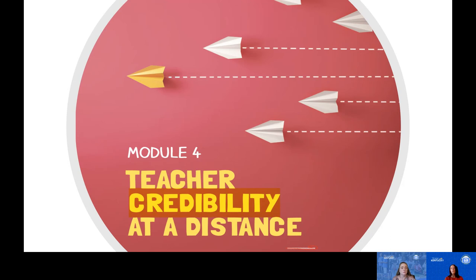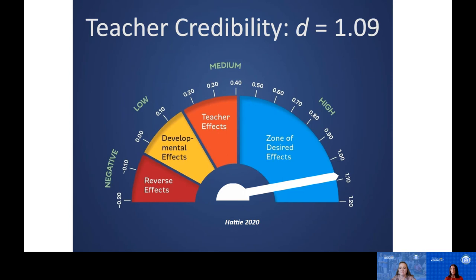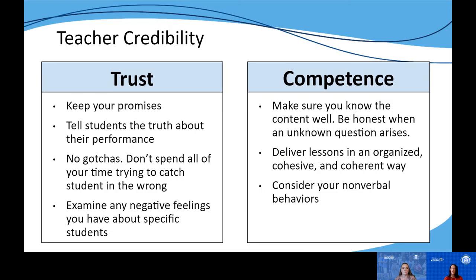Module 4 took a closer look at teacher credibility, and we know that teacher credibility can influence a student's likelihood to learn. From Hattie's meta-analyses, the effect size of teacher credibility is 1.09 — that is more than two years' growth in one year's time when our students see us as being credible. The text talked about four components that would help students see us as more credible.